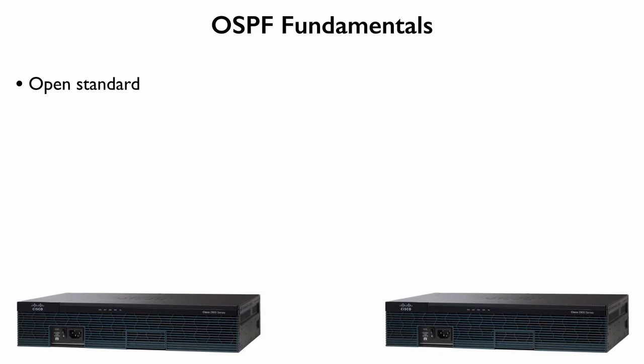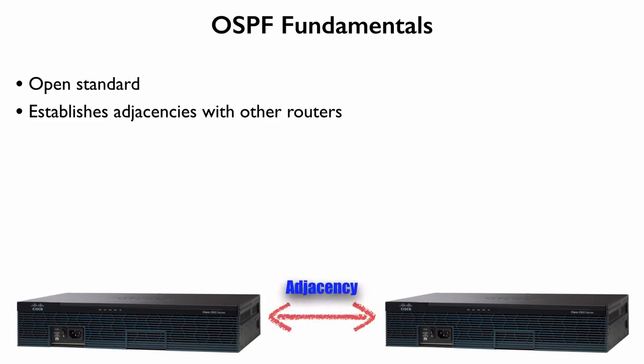OSPF can establish adjacencies with other routers — a relationship where two routers can send one another updates about network conditions. In an upcoming video we're going to distinguish the difference between an adjacency and a neighborship. Specifically, an OSPF speaking router can form a neighborship with another OSPF speaking router, but not necessarily form an adjacency.